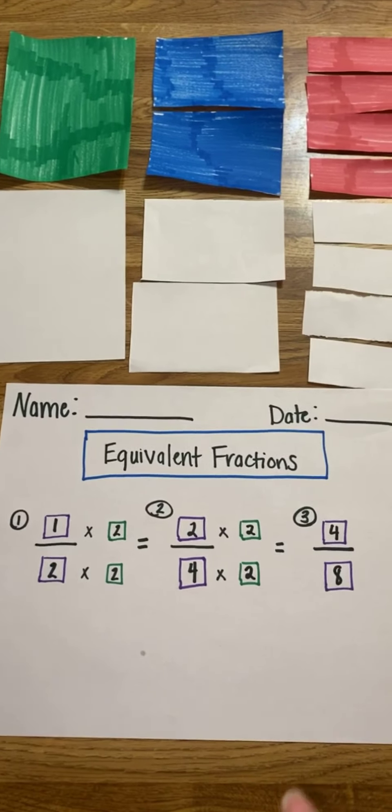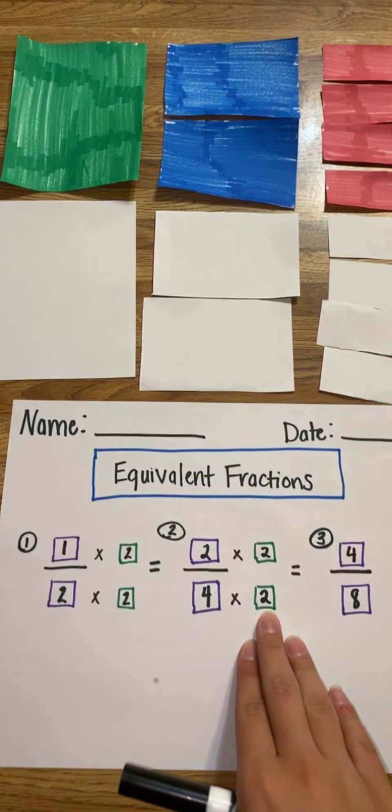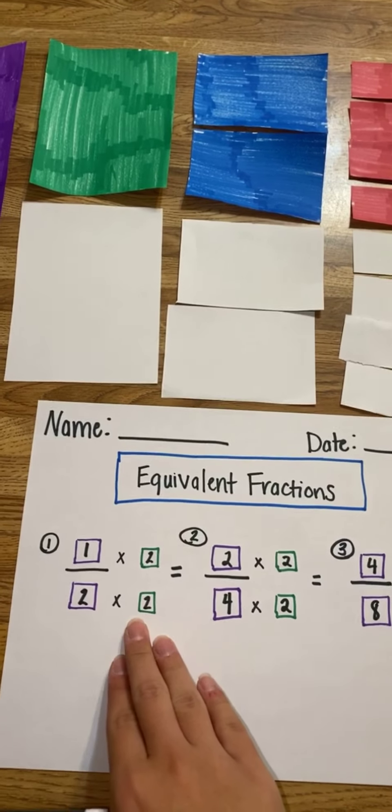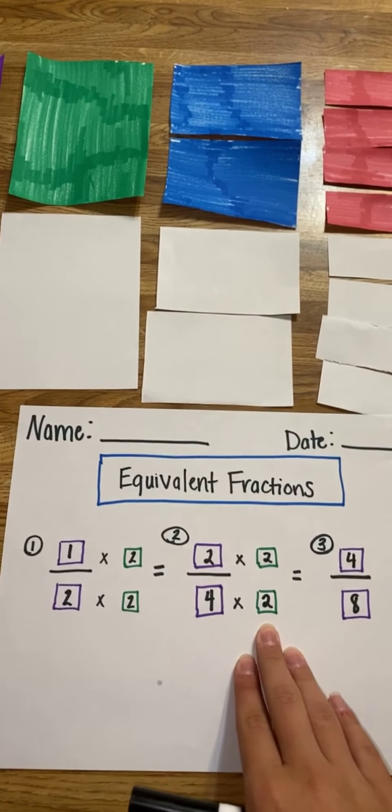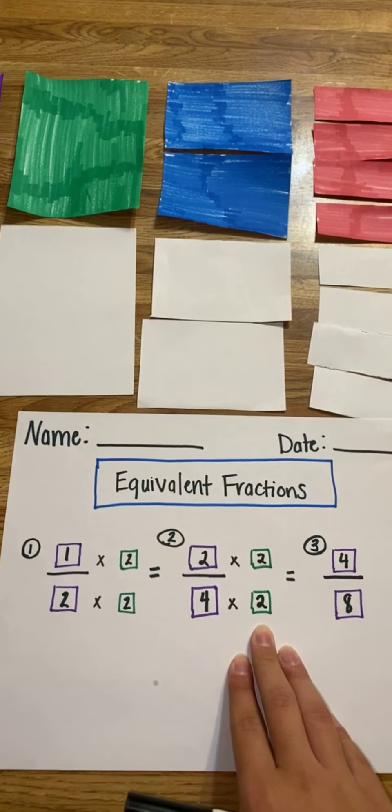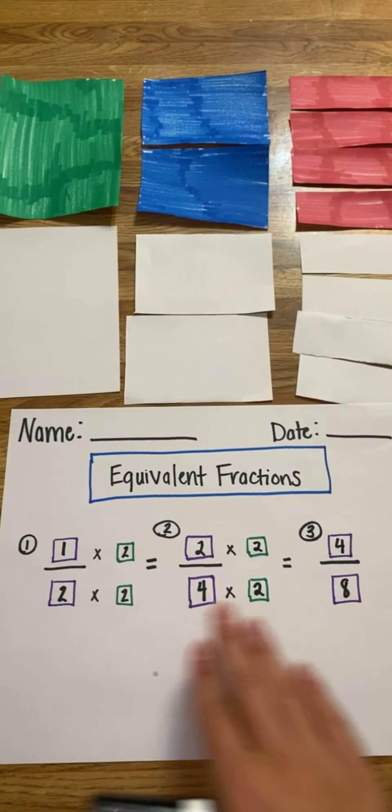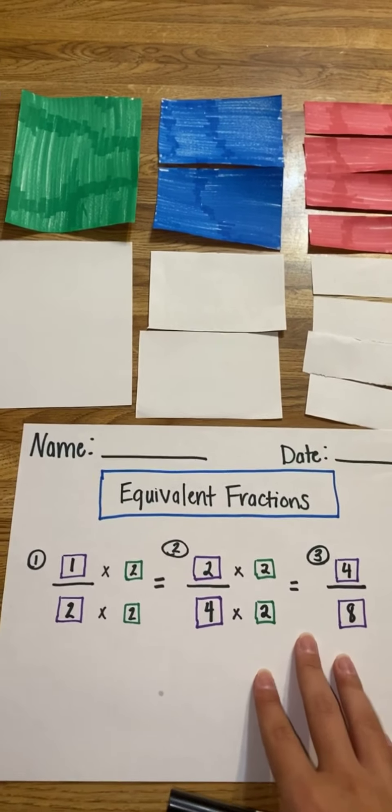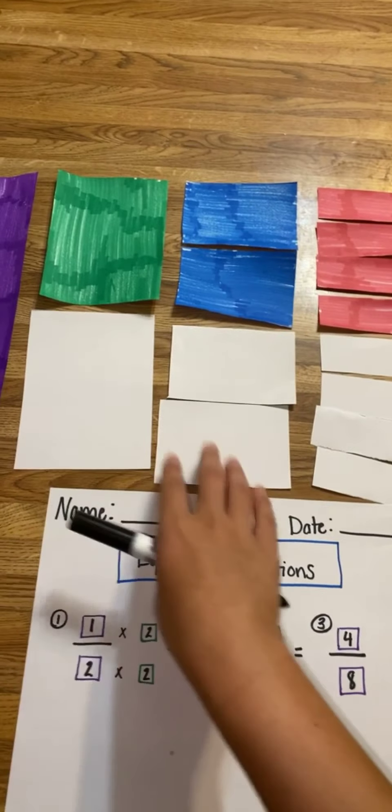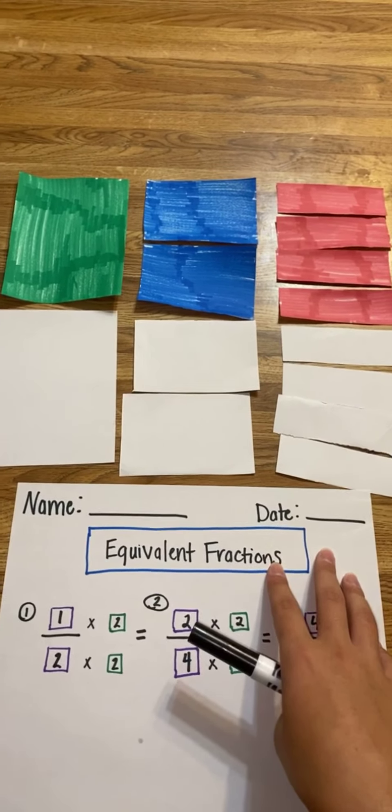You can point out and show your students that we've multiplied by the same number each time, multiplied by 2 and multiplied by 2. All of these fractions are equivalent. They can see the numeric way that we can create equivalent fractions, and they can also see it with the hands-on activity where they've sorted their pieces of paper.